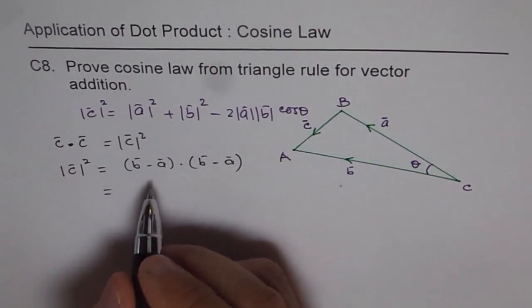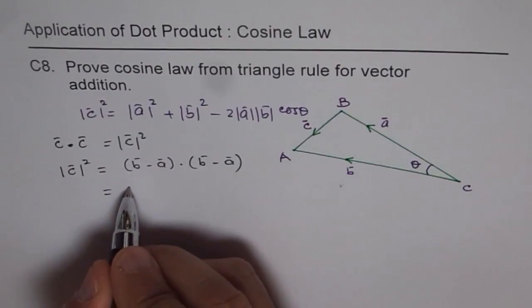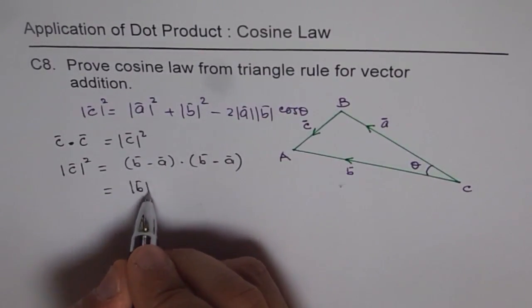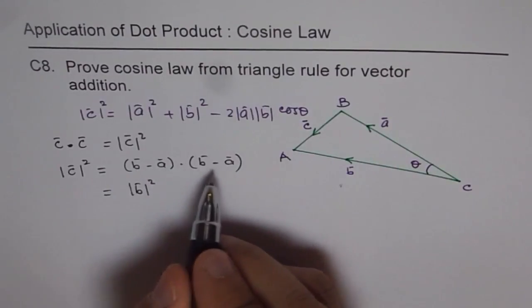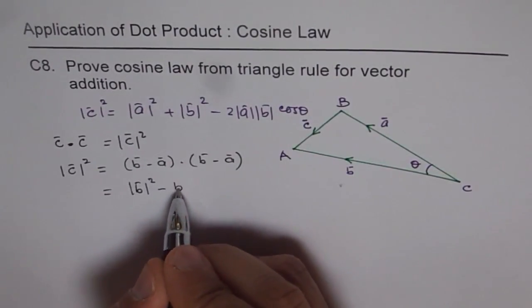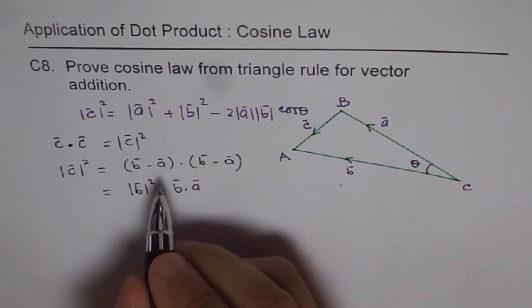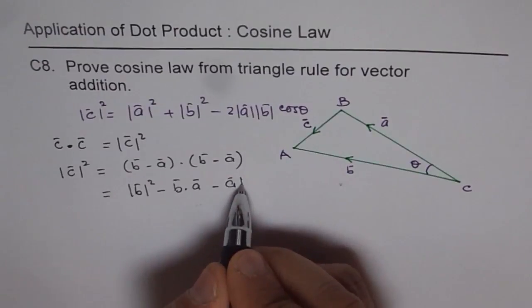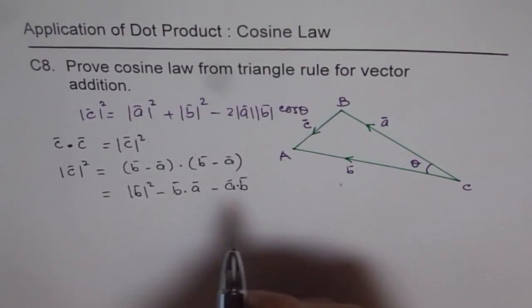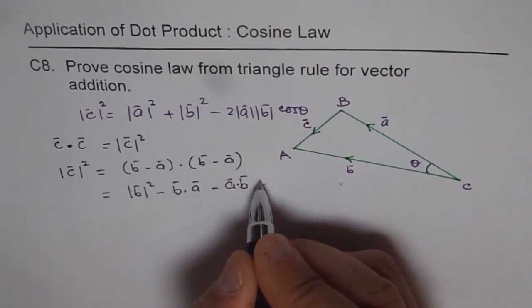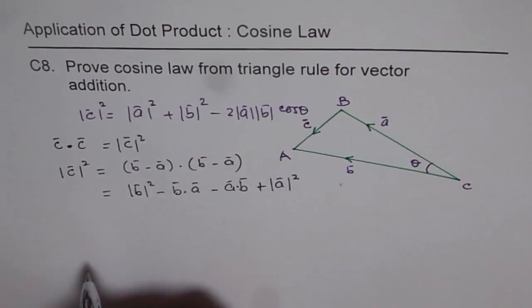Now, let's apply the dot product and expand it. So we get vector B dot B is magnitude B square, and B times dot of minus A will be B dot A. Minus of this will give us minus vector A dot B. And then we have minus, and minus becomes plus magnitude of vector A square.